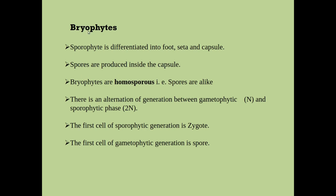In bryophytes, the sporophytic plant, that means the diploid plant, is differentiated into foot, seta, and capsule. The spores are produced inside the capsule. Bryophytes are homosporous in nature, that is all the spores produced by the plant are similar in structure.